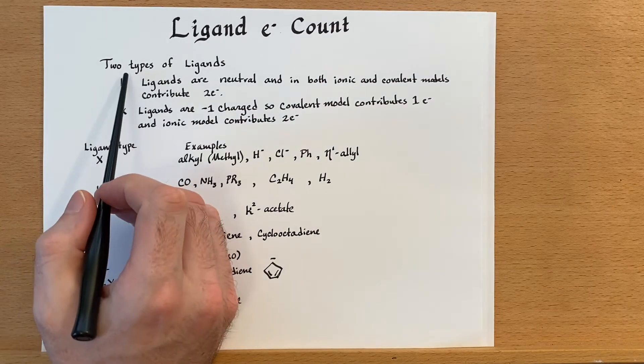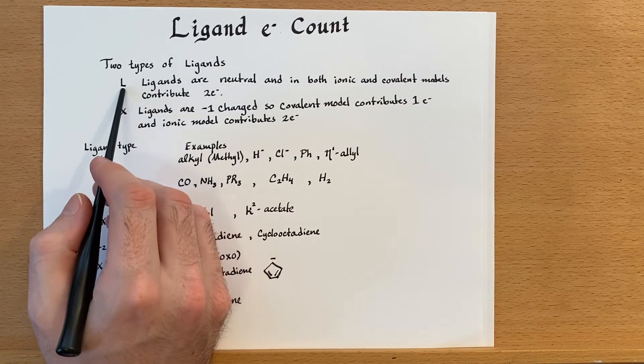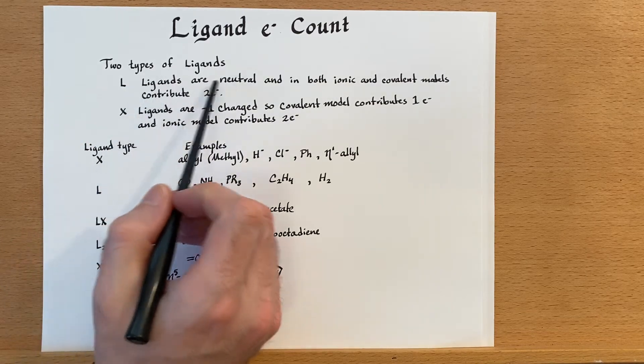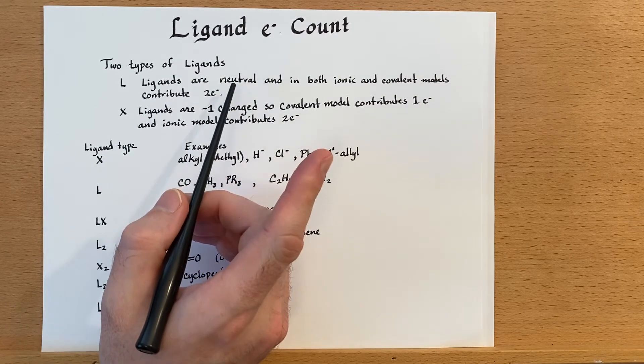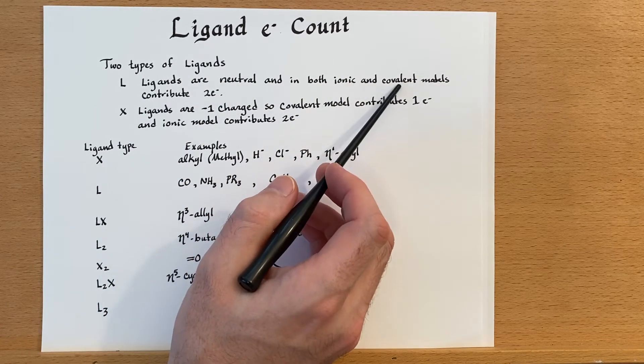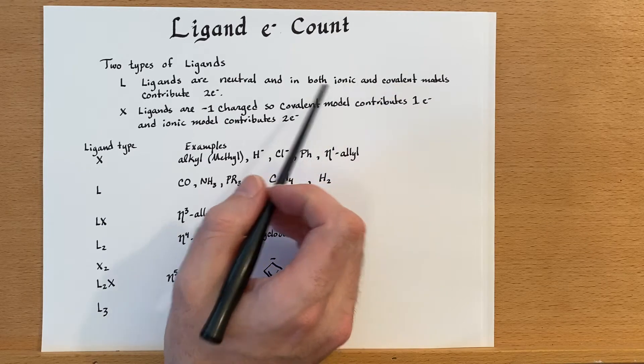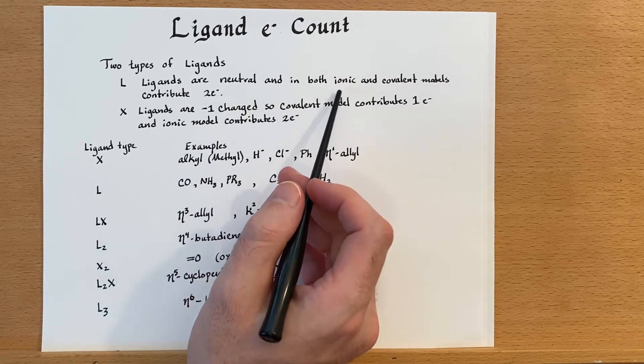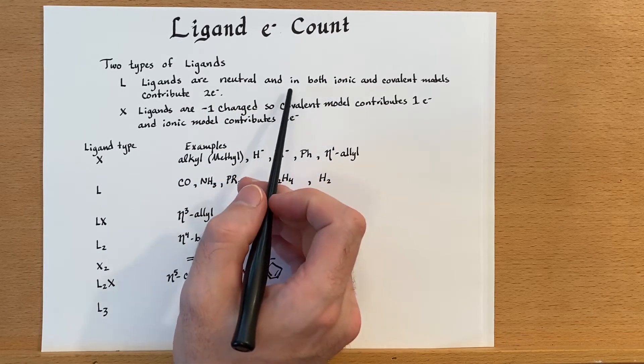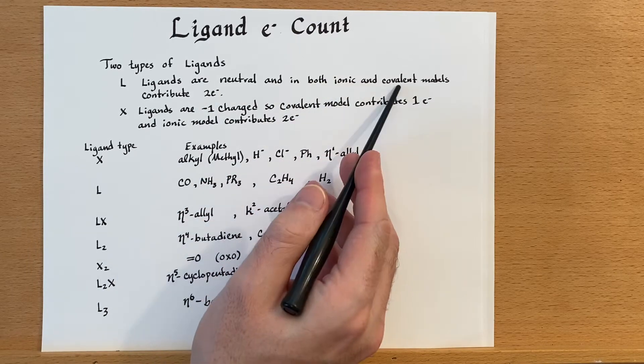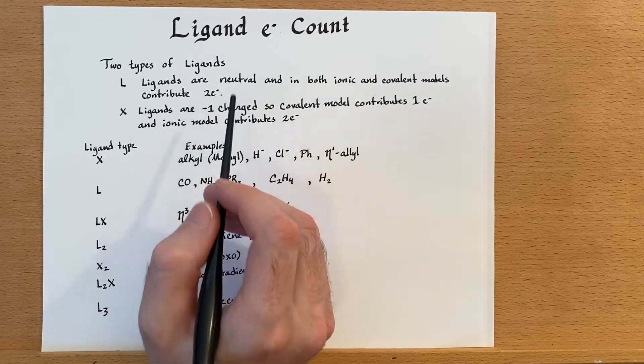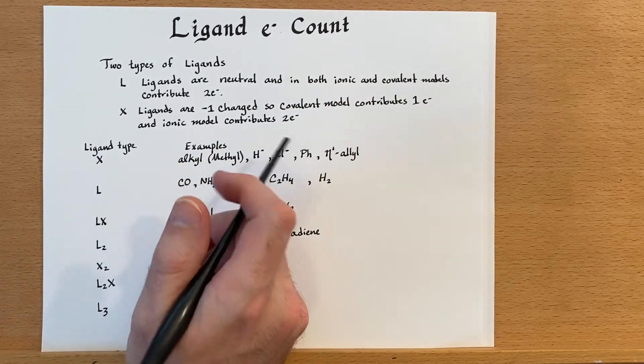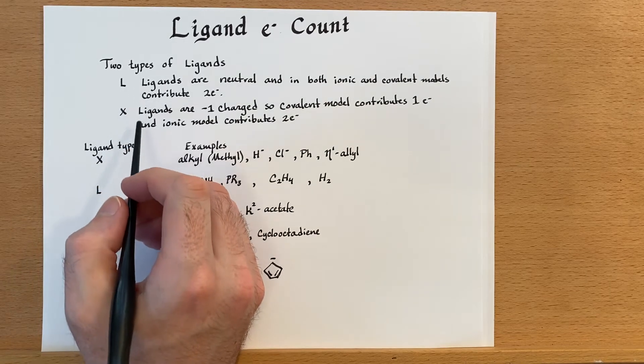There are really just two types of ligands. There are L ligands, that we call them L because they are neutral ligands, and in both the ionic way and the covalent way of counting electrons, they contribute two electrons to the count. Pretty simple to remember. Ionic and covalent, two electrons for that. So anytime you see an L ligand, it's donating two electrons.